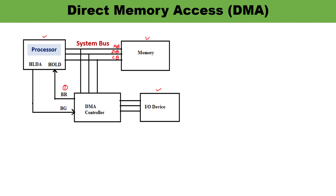When the processor receives a high logic (1) on the hold pin, it completes whatever the current machine cycle execution it is doing and then sends a hold acknowledgement signal (HLDA) to the DMA controller. This hold acknowledgement is also called the bus grant signal (BG), meaning the buses are being granted.